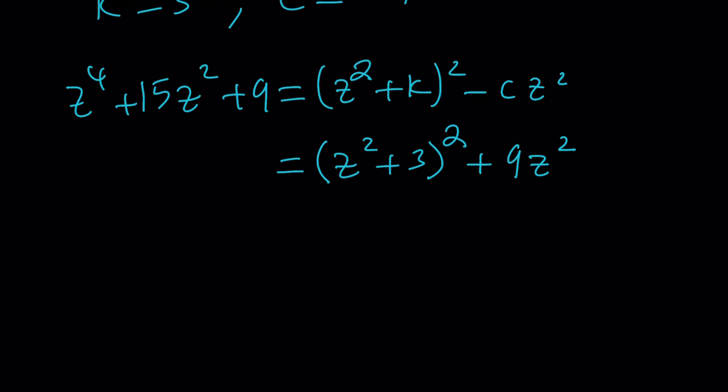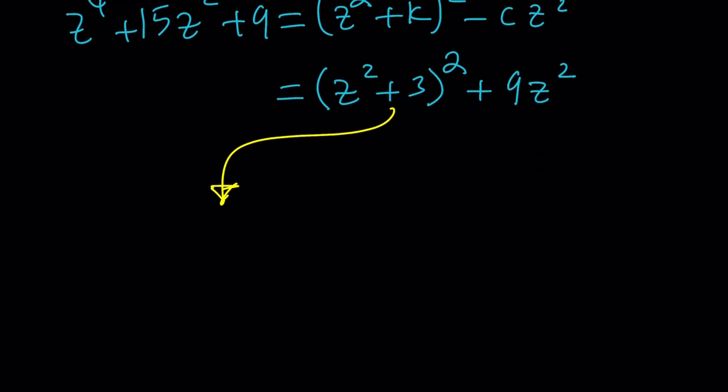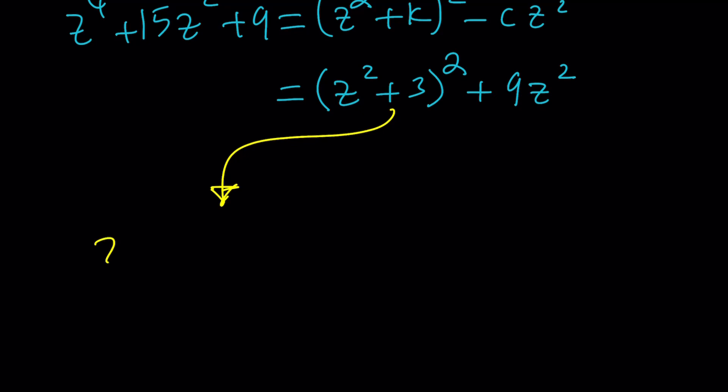Now we have this sum of two squares, but we want to be able to factor it. So let's go ahead and turn it again, two minute twists, into difference of two squares. Yes, that can be done with complex numbers. In real world, this is a sum of two squares. But in the complex world, I can basically write this as minus negative nine z squared.